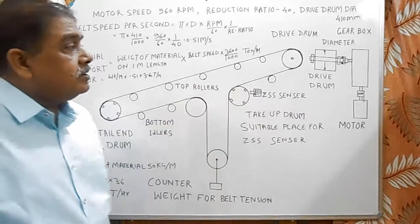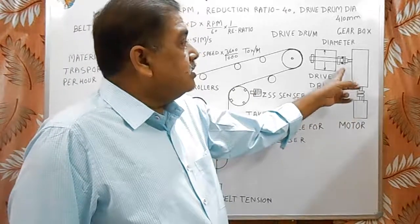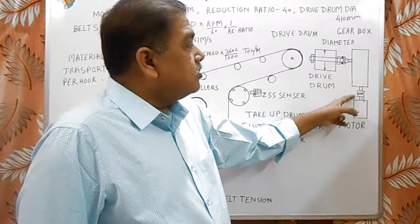In this the main function of reducer is to reduce the speed of motor. And here is one coupling gearbox to drum. Here is one coupling motor to gearbox.